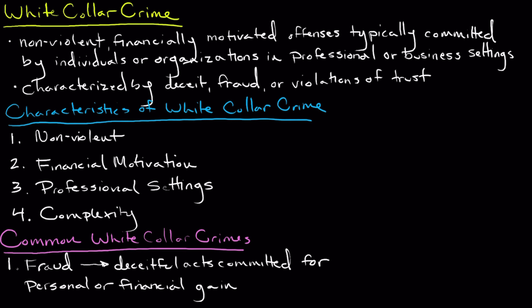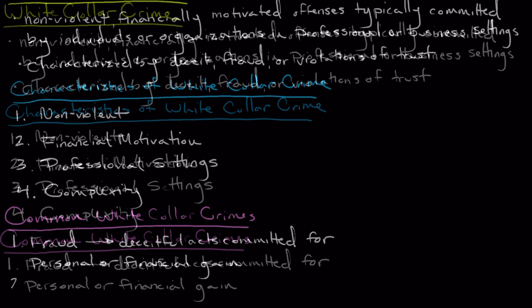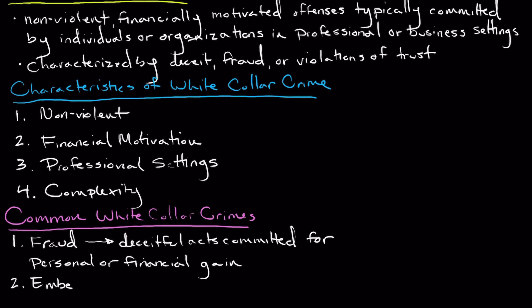In these cases, individuals will typically manipulate information, misrepresent facts, or engage in false pretenses to try to deceive victims and obtain money or assets. The next common type of white-collar crime is what's known as embezzlement.